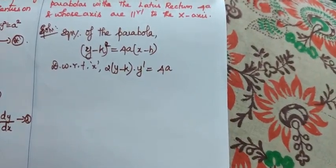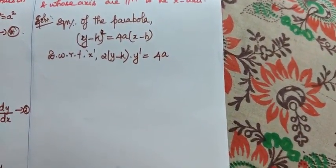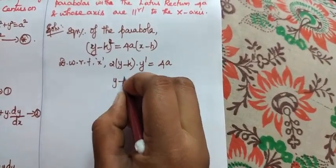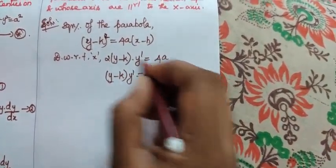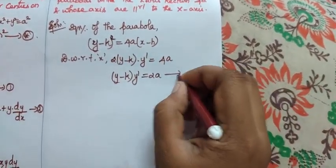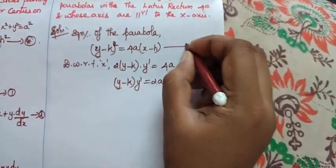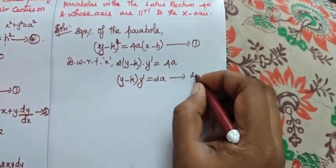X differentiation is 1 and h's differentiation is 0. So my answer is (y - k)y' = 2a. I can cancel 2 on both sides. I can have this given equation to be 1 and this to be 2.